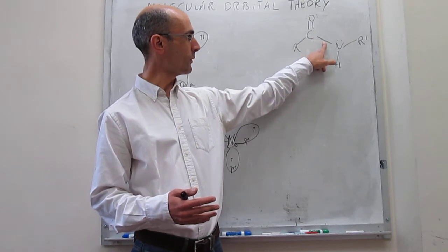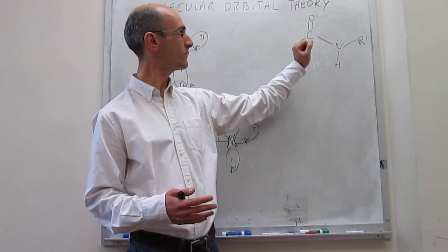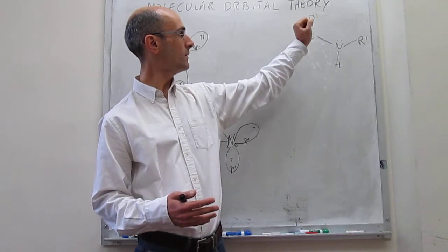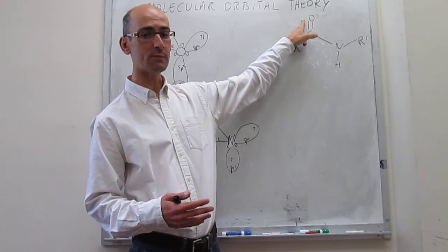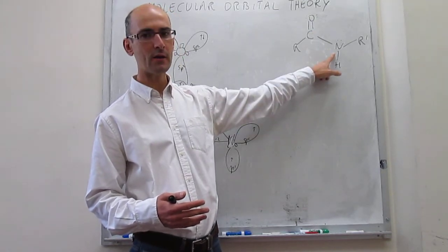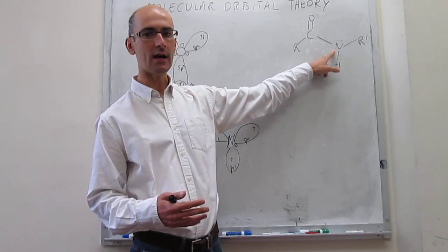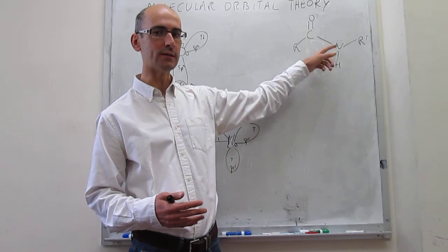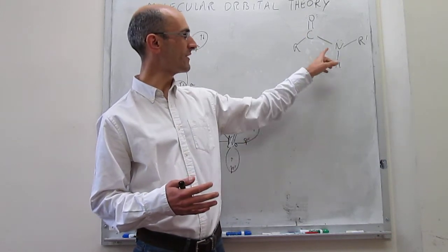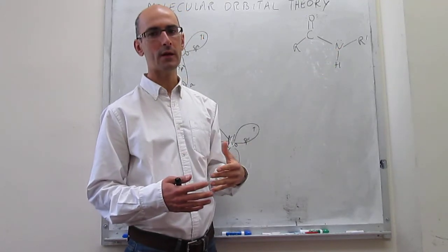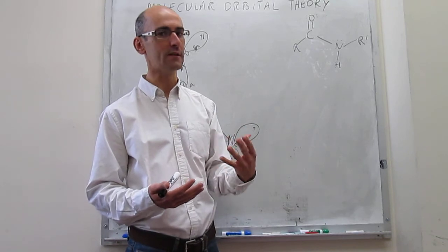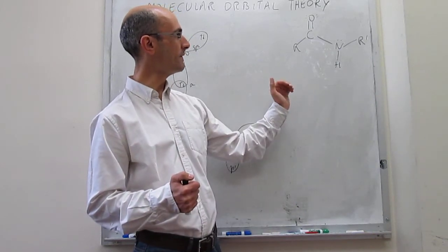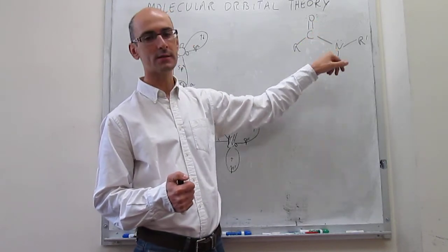Looking at carbon, the electron group arrangement is 3, giving sp2 hybridization. For nitrogen you have 4 electron groups, and for oxygen you have 3. So it looks like carbon would be sp2, oxygen would be sp2, and nitrogen would be sp3. But the problem with sp3 for nitrogen is that it would not explain planarity — sp3 gives a tetrahedral shape, while sp2 gives a planar geometry. So even though the electron group arrangement of nitrogen is 4, we're going to hypothesize that it is also sp2 hybridized.